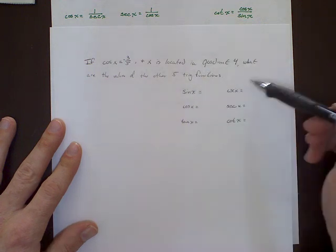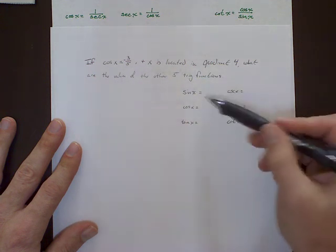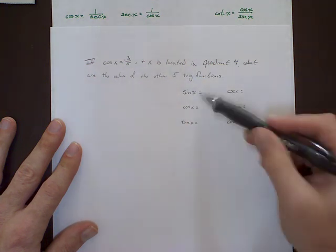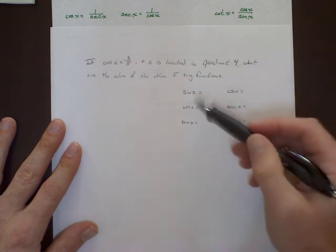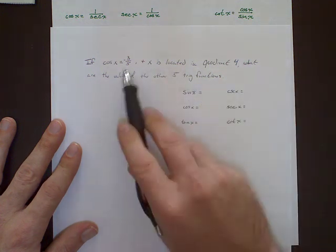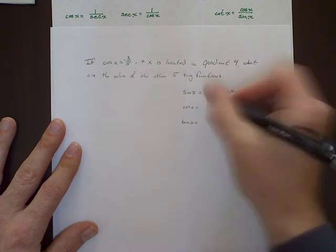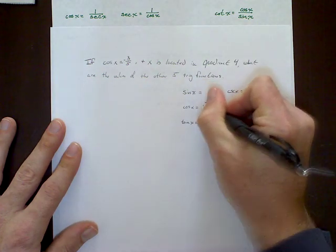then what are the values of the other 5 trig functions? So here we've got a list of our trig functions. Now keep in mind, we're not solving for x. We want to know what these trig values are, these trig functions are. And as we are told, cosine in the beginning, we are told cosine is already equal to negative 3 over 5. So we can go ahead and put that in there.